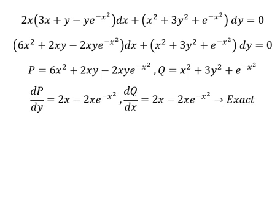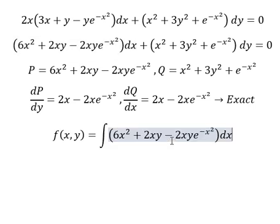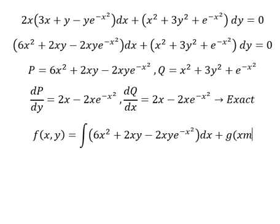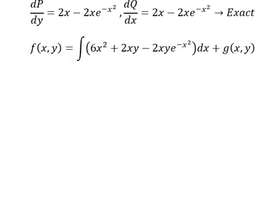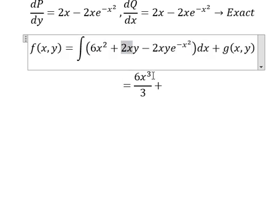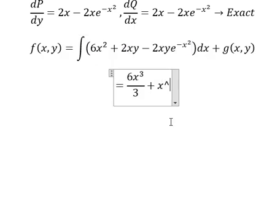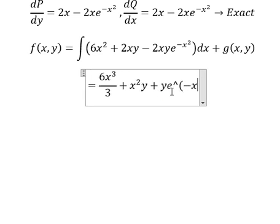Now we need to set up the function f(x,y) equal to the integral, so I integrate this one plus g(s,y). The integral of s squared is s to the power of 3 over 3. The next term, the integral of 2s, is s squared.